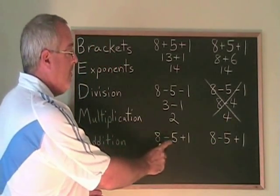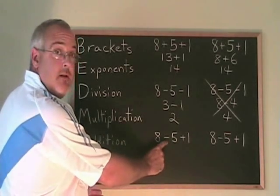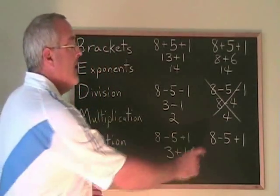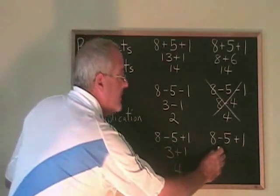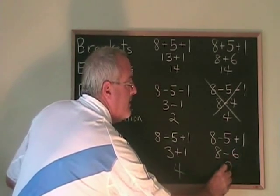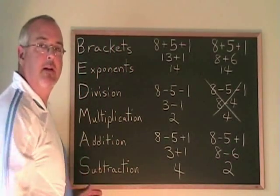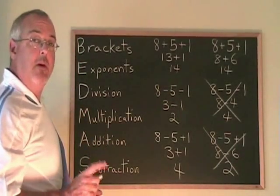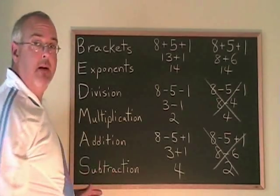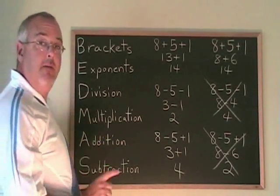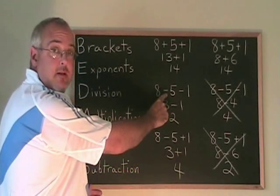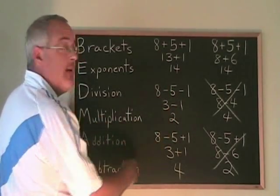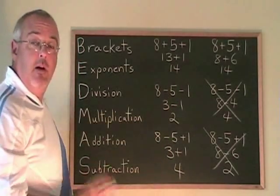Now let's look at a third example with a mixture of minus and plus. If we do the minus first, 8 minus 5 is 3, and 3 plus 1 is 4. If we do the plus first, 5 plus 1 is 6, giving 8 minus 6, which is 2 — a different answer again. The minus sign is causing problems. The rule we have to learn is: you don't always do addition first. What you have to do is do the leftmost operation first. For all three problems, do the first operation first, get an answer, then do the second, and you will always get it right.